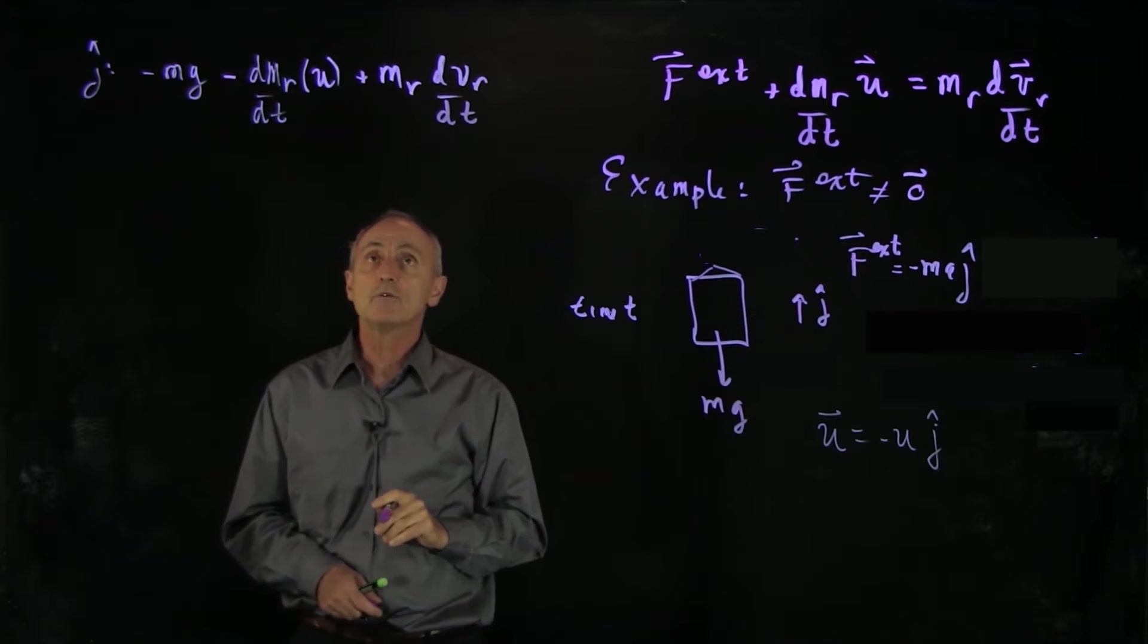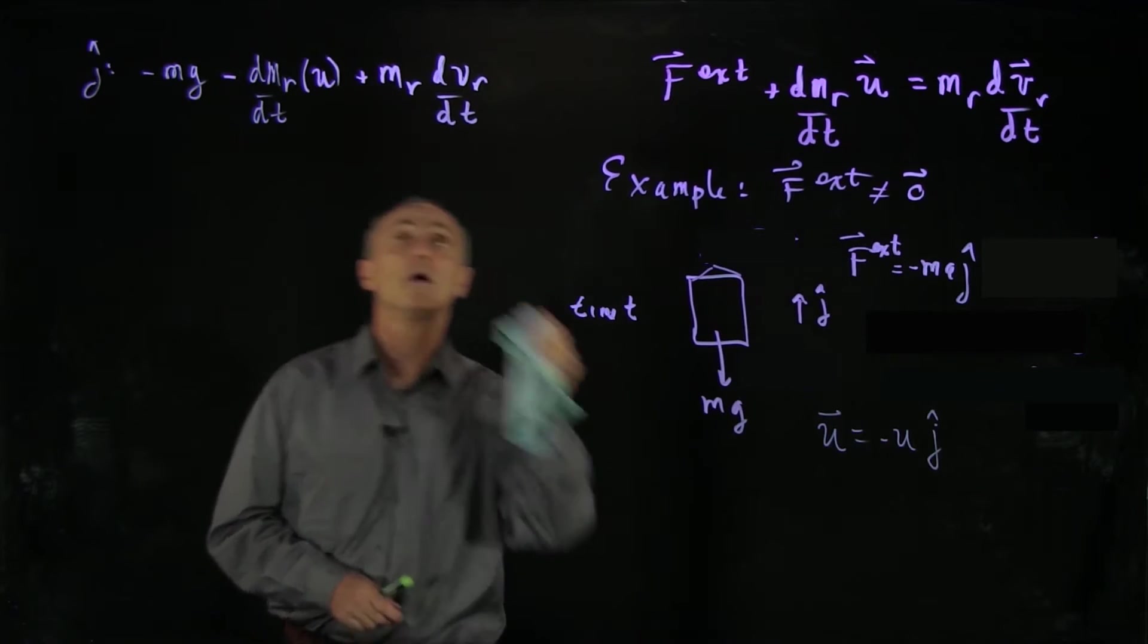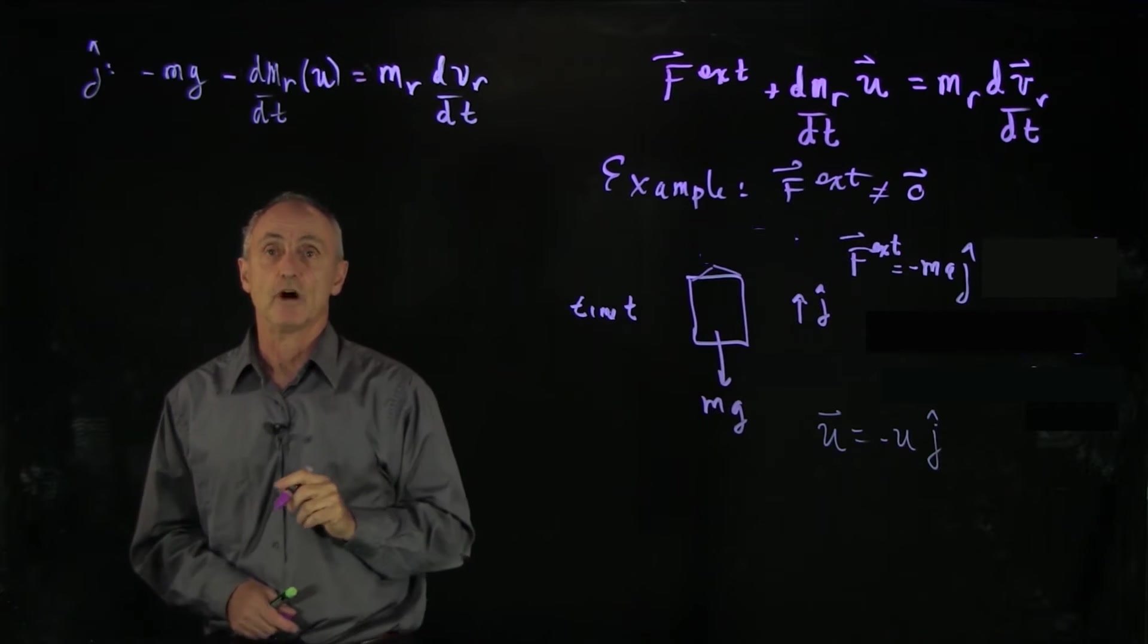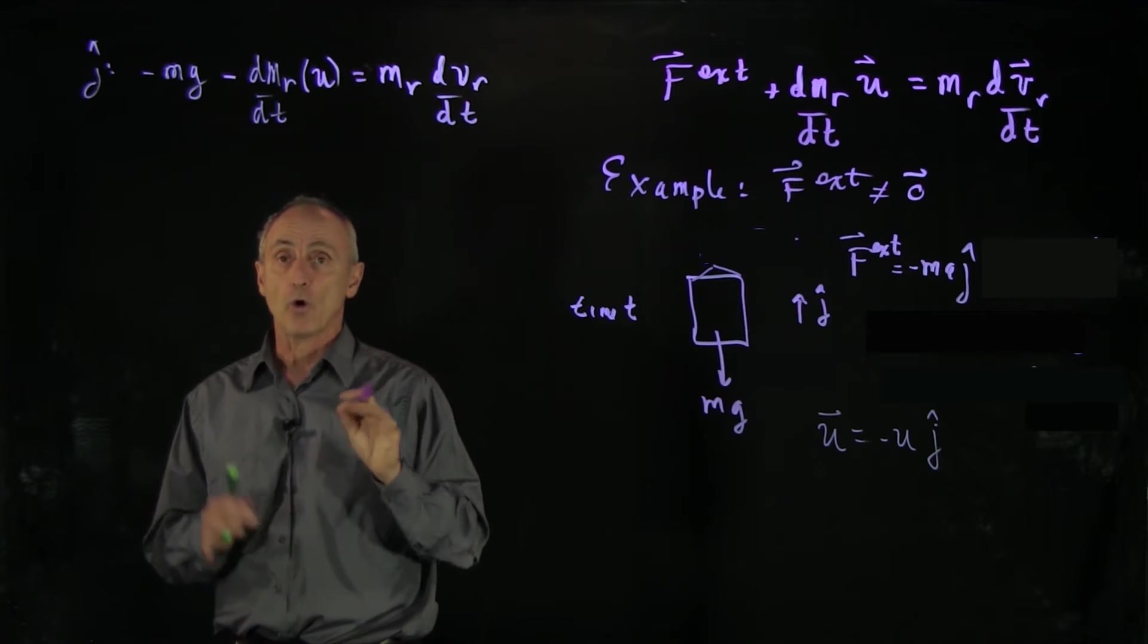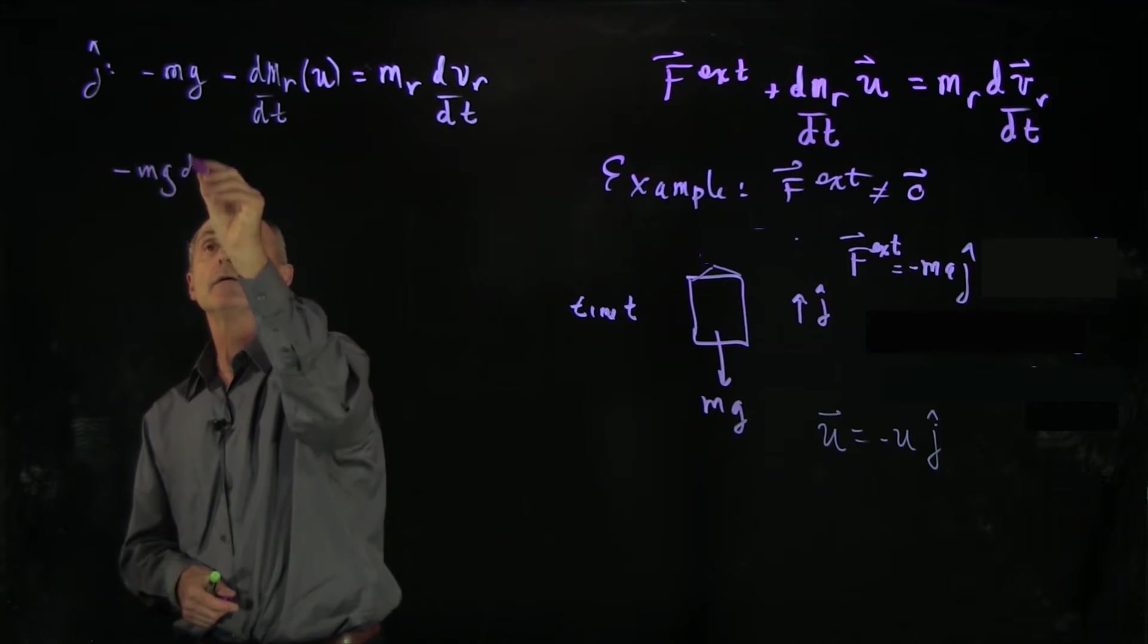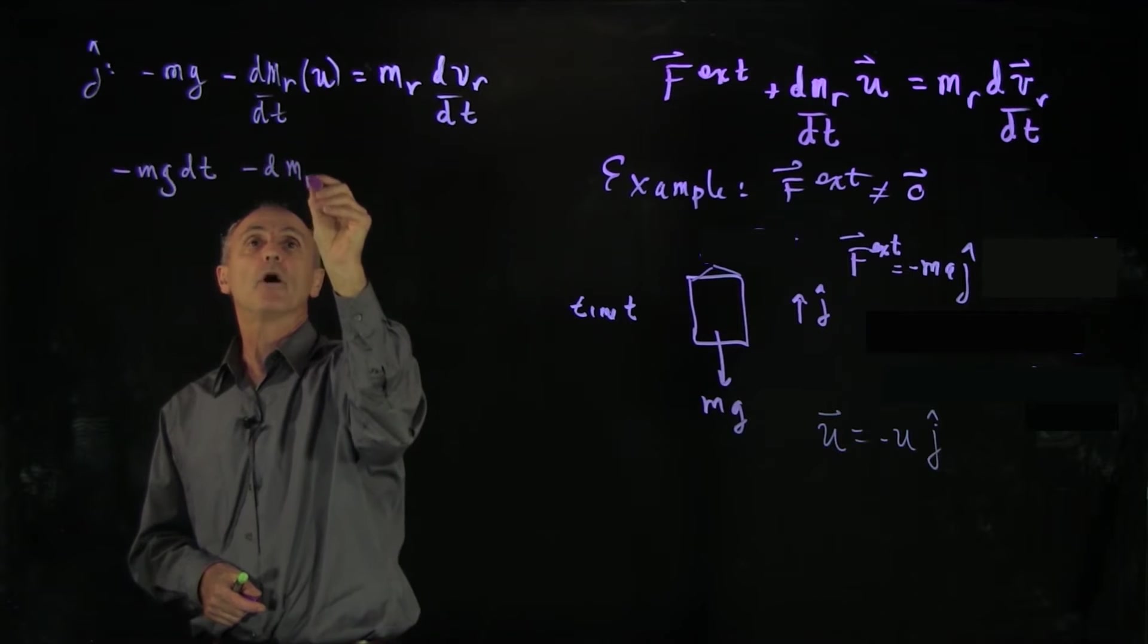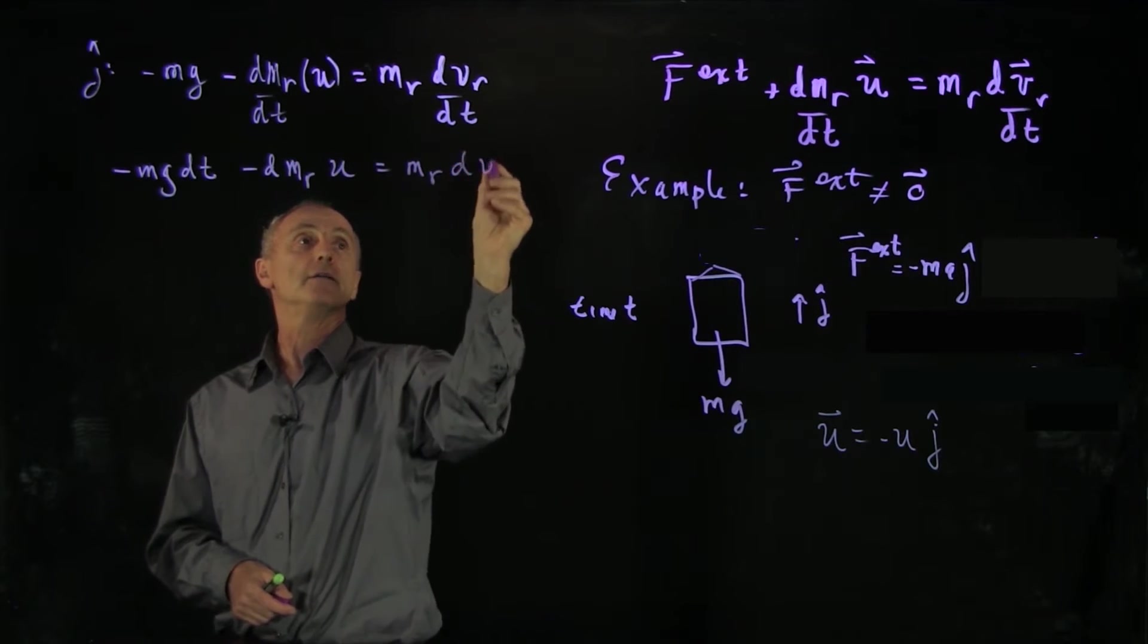Now once again, we're going to try to integrate. This is actually equal. And we're going to try to integrate this equation to find a solution for the velocity as a function of time when all the fuel is burned. So what we do is we'll multiply through by dt.